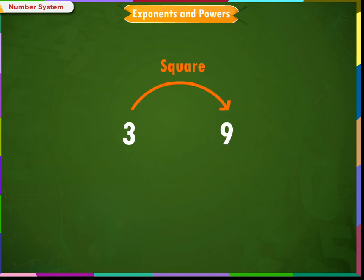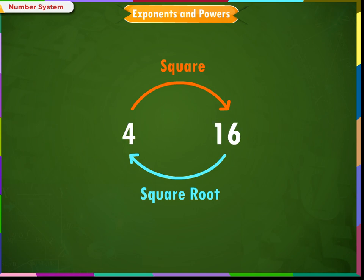So, √9 = 3. Similarly, 4 squared is 16, so √16 = 4. 5 squared is 25, so √25 = 5. 6 squared is 36, so √36 = 6, and so on.